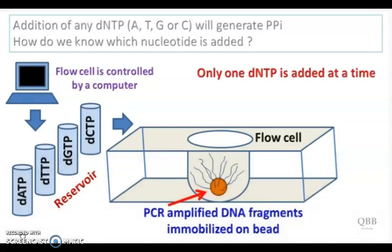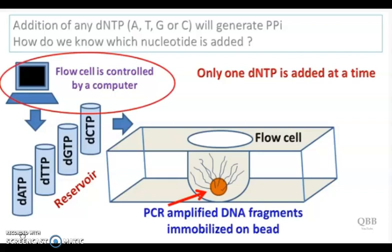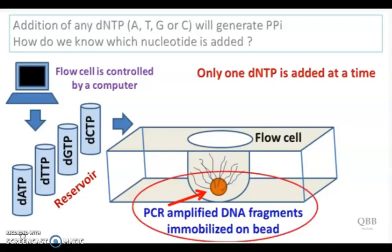The flow cell is controlled by a computer, which knows which dNTP is added. Because the reagents are coming in and out of the cell, the template DNA can be easily flushed out. To avoid this, template DNA is immobilized on beads which remain in the flow cell. Also, there are many copies of the same template DNA, which are generated by PCR.